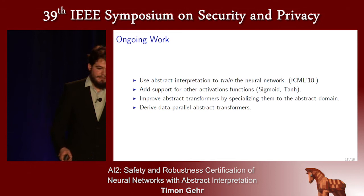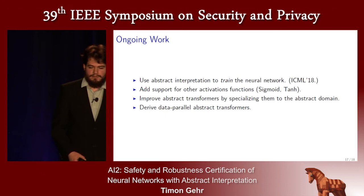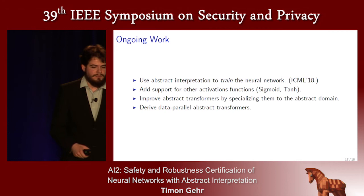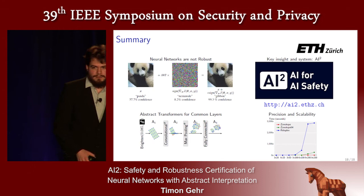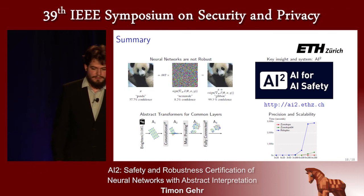Right now we're using abstract interpretation to train the neural network, and we are adding support for more activation functions — not just ReLU, but also sigmoid and tanh. We are improving the abstract transformers by specializing them to the abstract domain, so we can do abstract transformers directly for the zonotopes. We're also deriving data-parallel abstract transformers. To summarize: neural networks are not robust; we can use abstract interpretation to show that for specific images you cannot get the necessary perturbations; we have defined abstract transformers for common layers; and our approach is quite precise and scales.